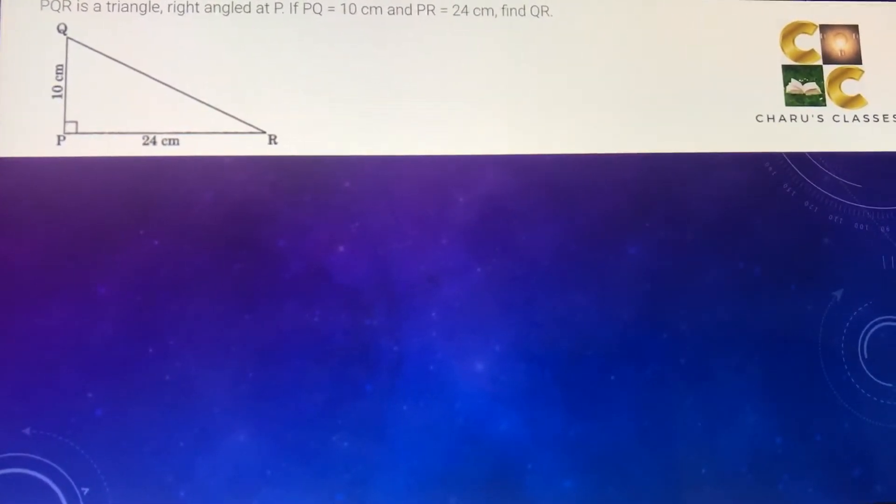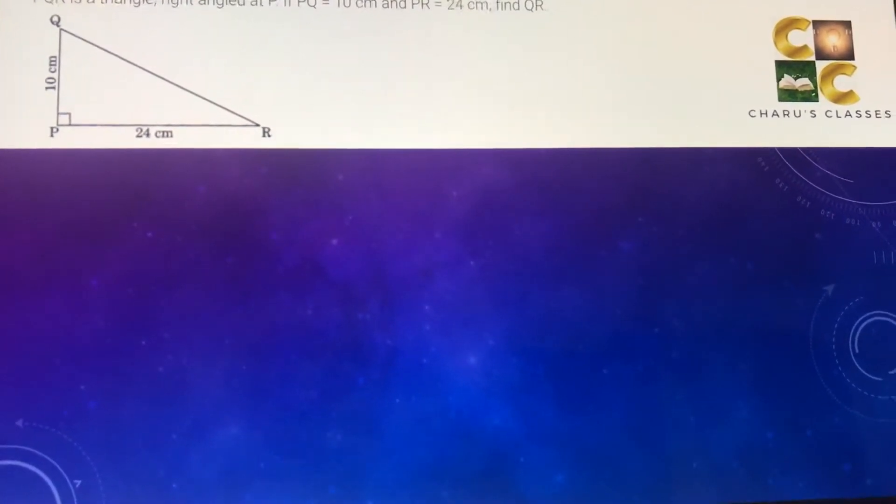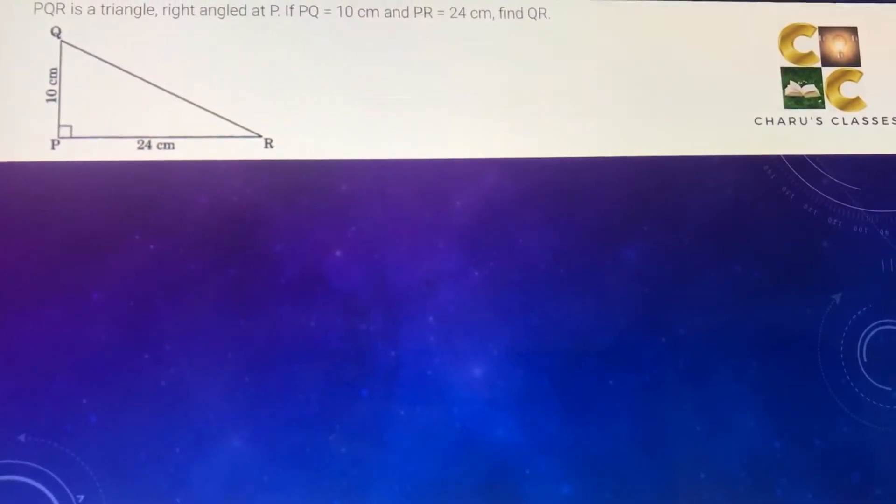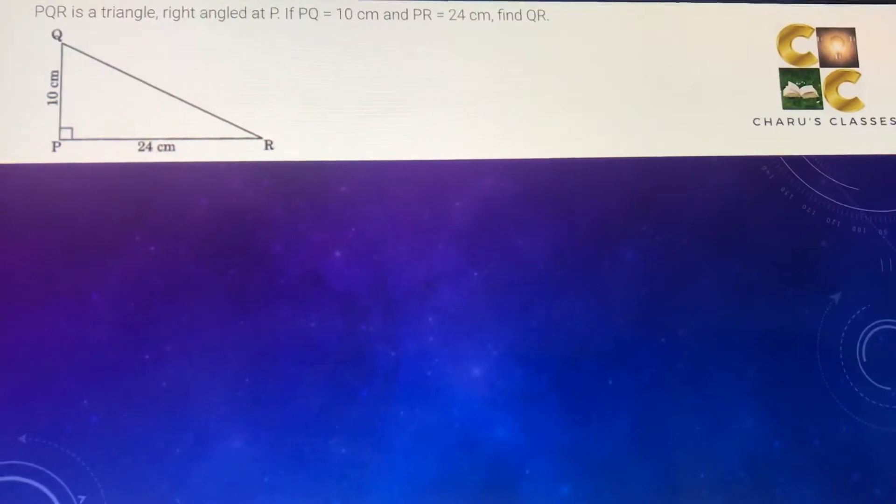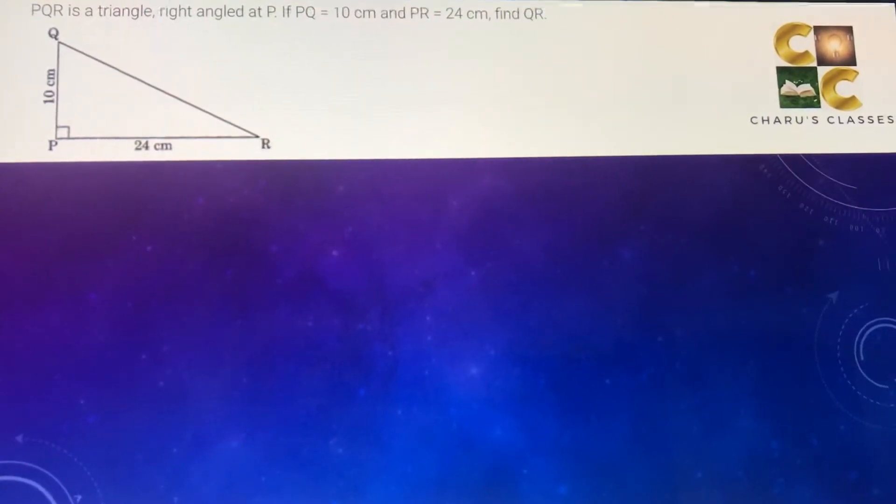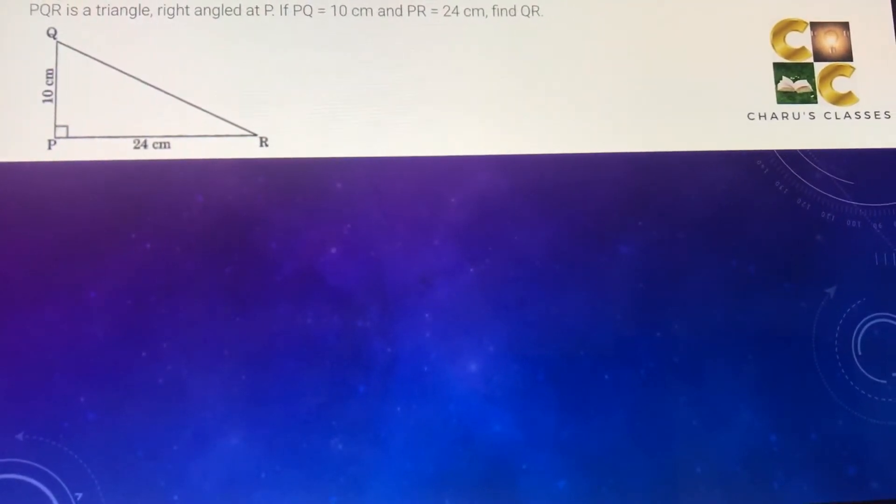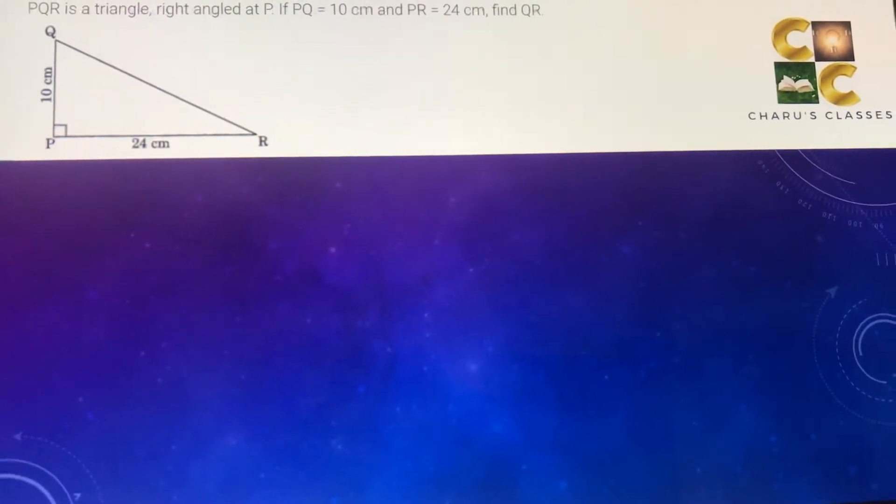Hello students, today we are going to do exercise 6.5 question number 1. PQR is a triangle right angled at P. If PQ is equal to 10 centimeter and PR is equal to 24 centimeter, find QR.